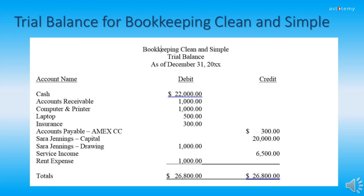Here is your completed trial balance for Bookkeeping, Clean and Simple. All the figures were pulled from our T-accounts diagram on the first page of your handout. Once you plug in the numbers, you add up all the debits and then all the credits. If done correctly, your debits should total $26,800 and your credits should total $26,800. It's imperative that everything is in balance before you move on.